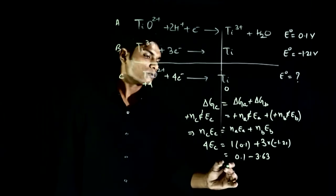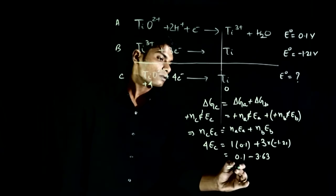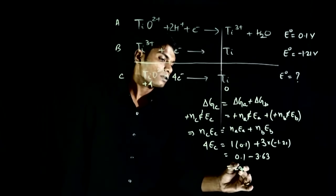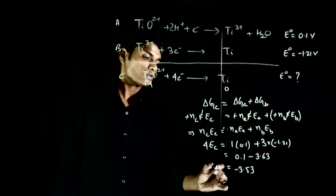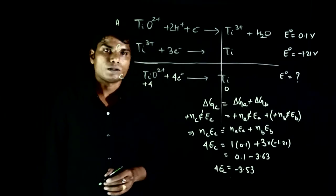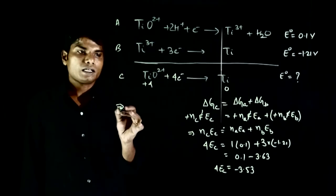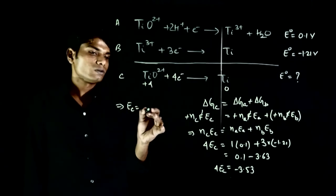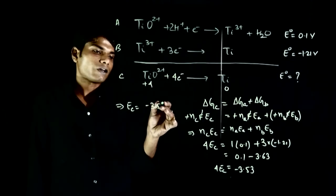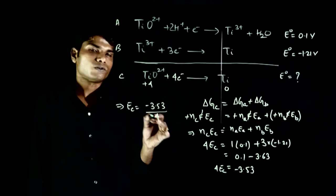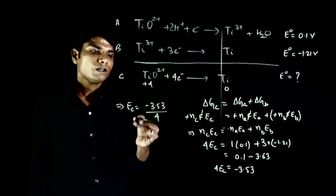So, this is equal to minus 3.52. So, 4 E of C is equal to minus 3.53 implies that E of C is equal to minus 3.53 by 4. We divide both sides. Answer is minus 0.88.